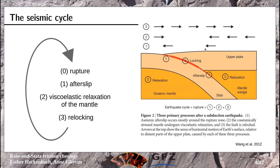Things that we know, for example, are surface movements, which we can observe with GPS data or InSAR. This is illustrated here for a subduction zone: first there's a rupture, then afterslip where the upper plate moves seaward, then some viscous relaxation of the mantle, and then when the fault relocks the upper plate moves landward again — which is something that we can measure.